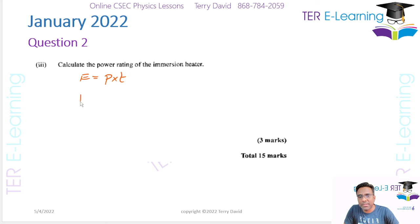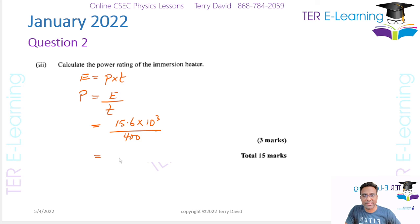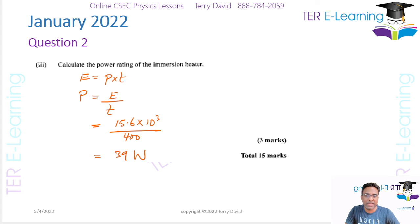The next part asks us to calculate the power rating of the heater. Energy equals power multiplied by time, so power equals energy divided by time: 15.6 × 10³ ÷ 400 = 39 watts. So the power rating of the heater is 39 watts. That's the full question for 15 marks.